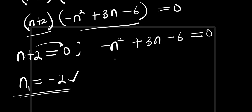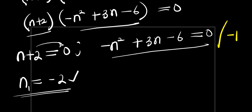Now, to solve the quadratic, I can divide each term by -1 because I want the leading coefficient to be positive. I divide each term by -1.